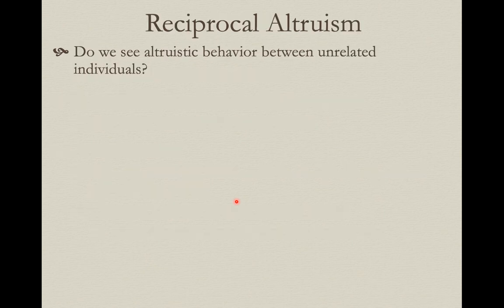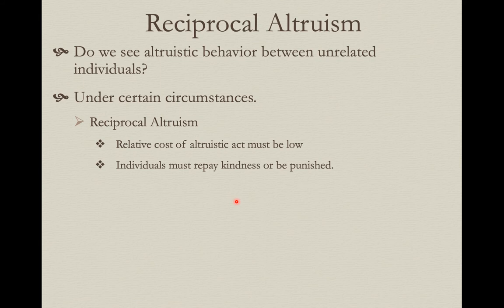I've been focusing on kin selection driven by the degree of relatedness between the altruist and the individual they're helping. But is there certain circumstances in which altruistic behavior can be seen between unrelated individuals? Under certain circumstances this can occur, and it's called reciprocal altruism. There are restricted conditions — one requirement is that the cost of the altruistic act is relatively low. We're not talking about giving up a full reproductive season or sacrificing your life to save another individual.